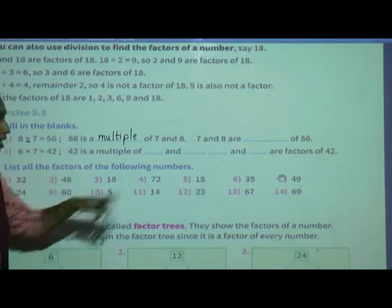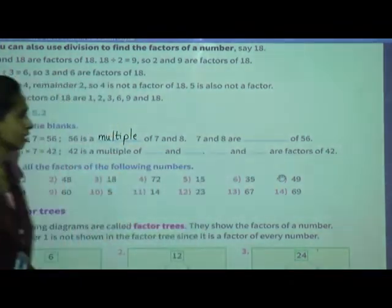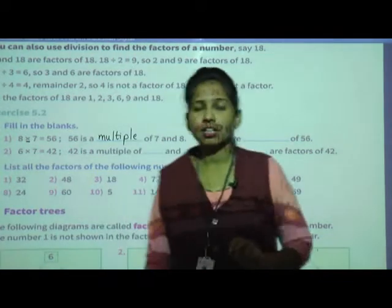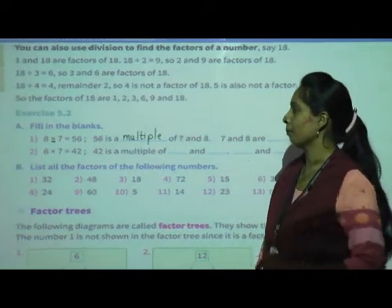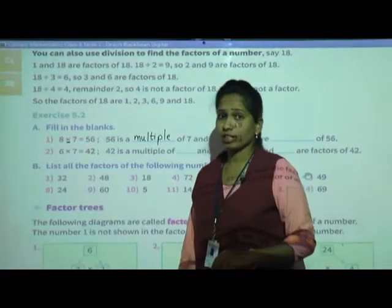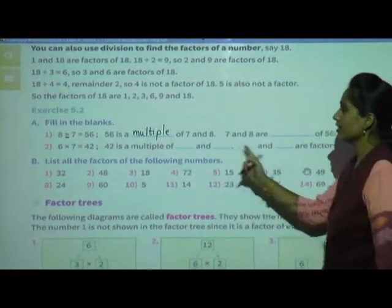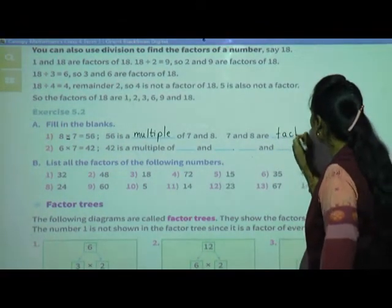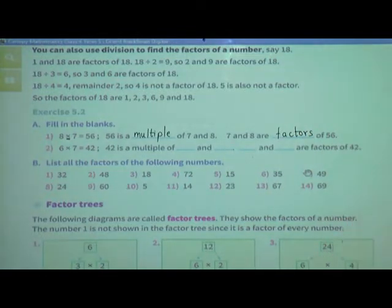The next part: 7 and 8 are dash of 56. Whenever we multiply any two numbers we get the product — so those numbers are called factors. So 7 and 8 are factors of 56.